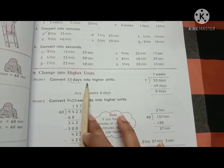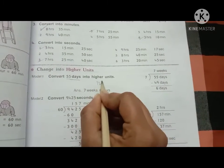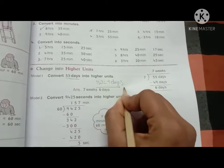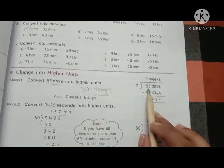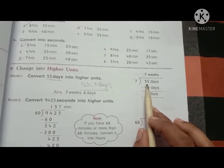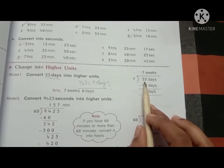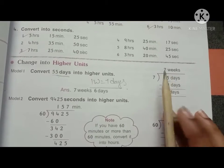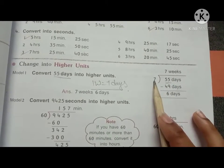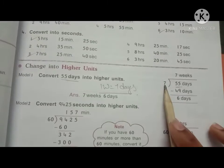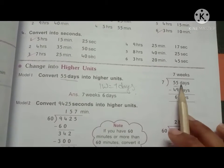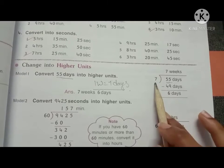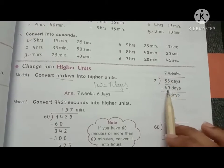First of all, one week is equal to how many days? One week is equal to 7 days. We already know this. Since 55 days are there, we have to divide by 7. We have to do division. 7 times 7 is 49.